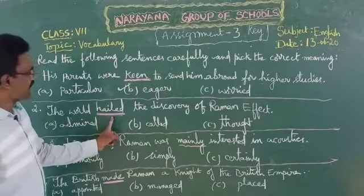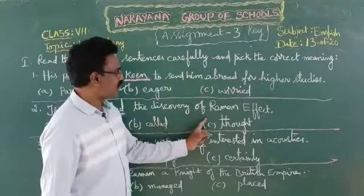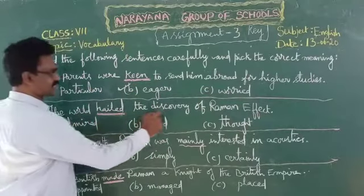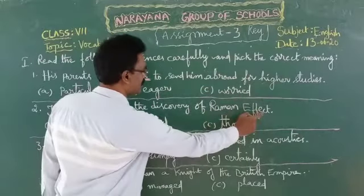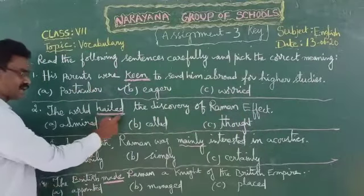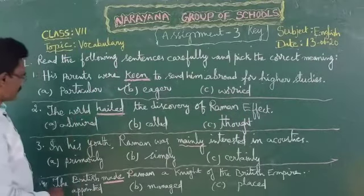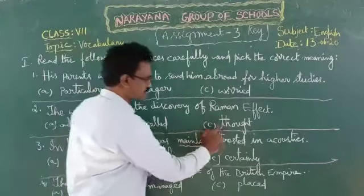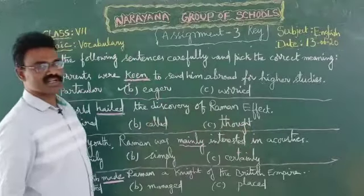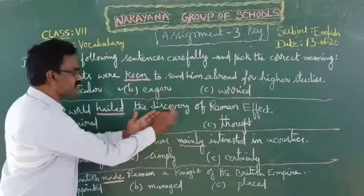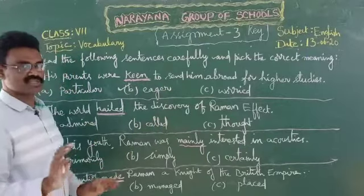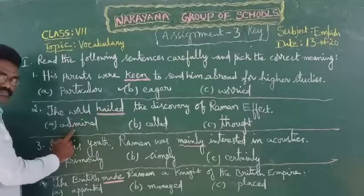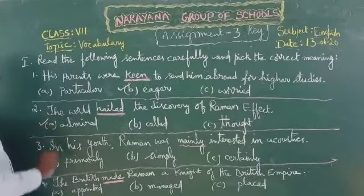Now let us see the second one: The world hailed the discovery of the Raman effect. The word 'hailed' is underlined. Three options are given — Option A: admired, Option B: called, Option C: thought. You may get doubt here — 'the world called the discovery' is not correct. Here, 'the world admired.' So 'hailed' means 'admired.' Option A is the correct answer.